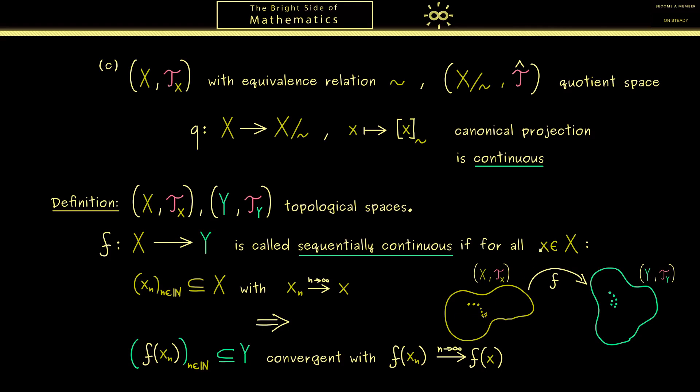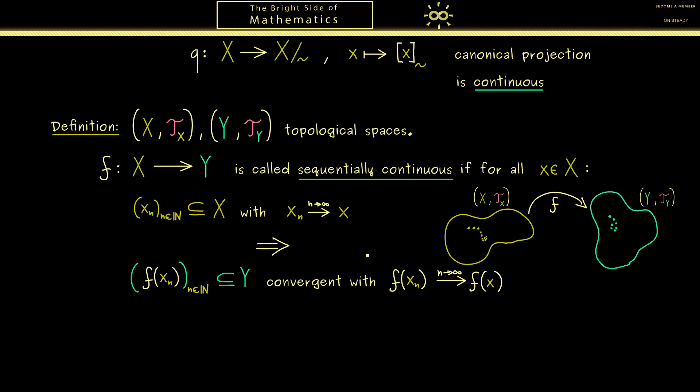This makes sense when you want to calculate with a function because this property here means you can pull the limit inside the function. However, in general topological spaces it turns out that this is not equivalent to the definition from above.